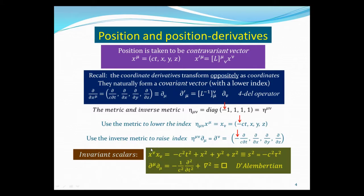You can also form invariants. For the position vector, the invariant is S² = −c²τ², the proper time squared. For the del operator, contracting contravariant and covariant forms gives a minus sign, yielding the d'Alembertian operator — the wave operator familiar from electromagnetism.